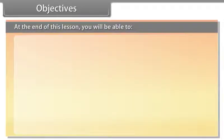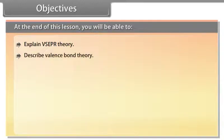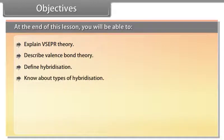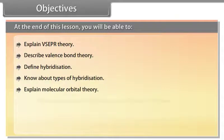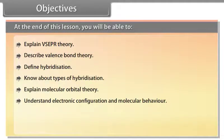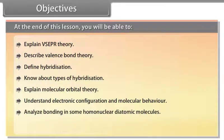At the end of this lesson, you will be able to: explain VSEPR Theory; describe Valence Bond Theory; define Hybridization and know about types of hybridization; explain Molecular Orbital Theory; understand Electronic Configuration and Molecular Behavior; analyze bonding in some homonuclear diatomic molecules; and define Hydrogen Bonding.